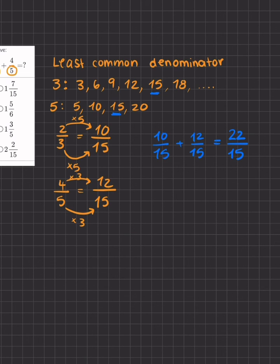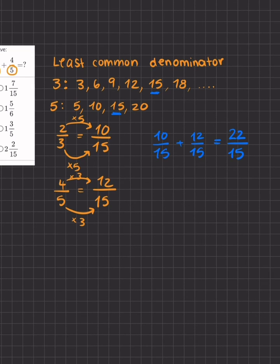Now the answers, as you see, are listed as mixed numbers and not as improper fractions. Okay, when our numerator is bigger than our denominator, it's called an improper fraction. Now to turn it into a mixed number, we ask ourselves,